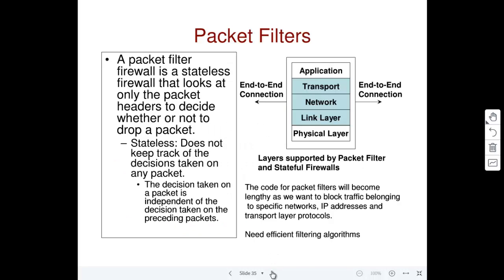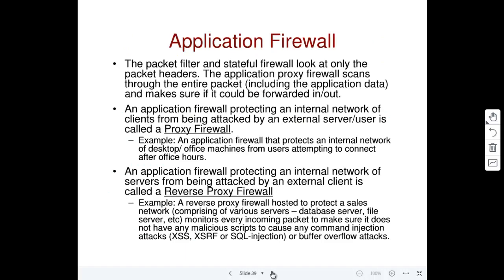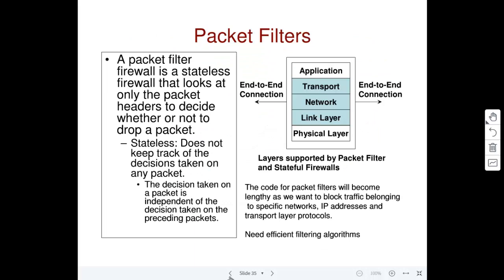There are three categories of firewalls with increasing complexity: the packet filter firewall, the stateful firewall, and the application firewall. Broadly, the packet filter and stateful firewalls look only at packet headers — specifically the MAC address, IP address of source and destination, and port numbers of the sending and receiving applications. The application firewall looks at both headers and data — essentially the entire packet.